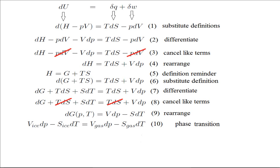In line 10, I've taken the right-hand side of line nine and written it to show ice on the left and gas or vapor on the right.